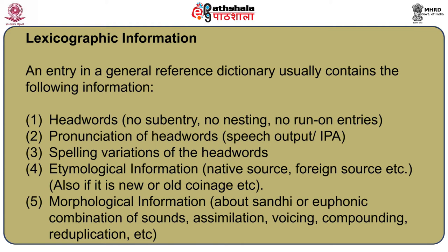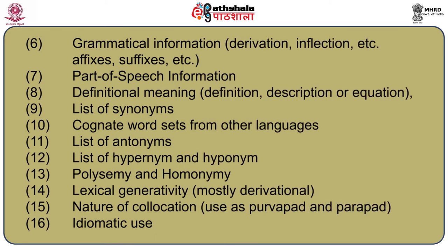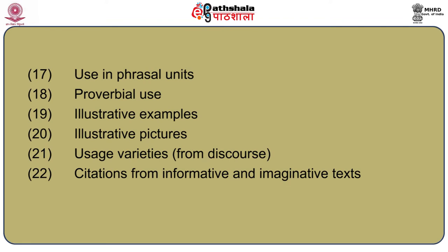Spelling variations of the headwords, etymological information from native or foreign sources, morphological information, grammatical information, part of speech information, definitional meaning, list of synonyms, cognate word sets from other languages, list of antonyms, list of hypernyms and hyponyms, polysemy and homonyms, lexical generativity, nature of collocation, idiomatic usage, use in fixed units, proverbial usage, illustrative examples, illustrative pictures, usage varieties, and citations from informative and imaginative texts.